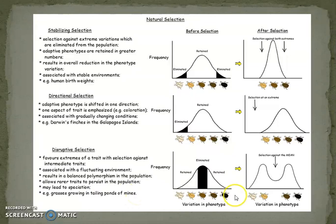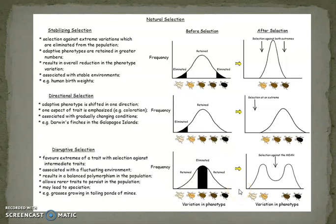In disruptive selection, the mean will decrease while variation is increasing — phenotypic variation increases. Environmental conditions in the upper and lower range are flexible. It splits a homogenous population into two or more adaptive forms. It occurs in populations occupying areas with different types of resources. Natural selection operates in heterogeneous environmental conditions where more than one different environmental factor operates against the same phenotype.